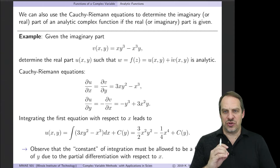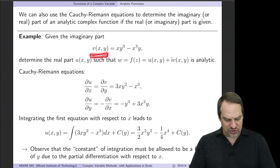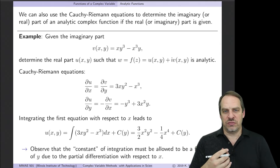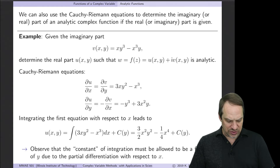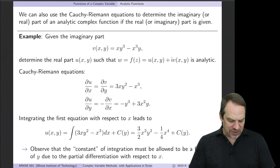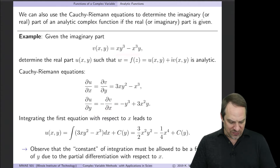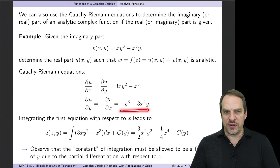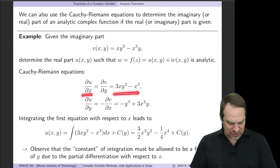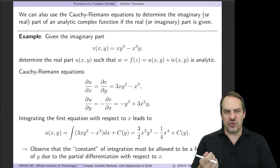Now let's look at another way to use the Cauchy-Riemann equations. Suppose we're given the imaginary part of a function — here it's v = xy³ minus x³y. We want to find the corresponding real part u. We use the Cauchy-Riemann equations: partial u partial x equals partial v partial y, which gives 3xy² minus y³. Likewise, partial u partial y equals minus partial v partial x, which gives minus y³ plus 3x²y. This gives us relationships for partial u partial x and partial u partial y, from which we can recover u as a function of x and y.